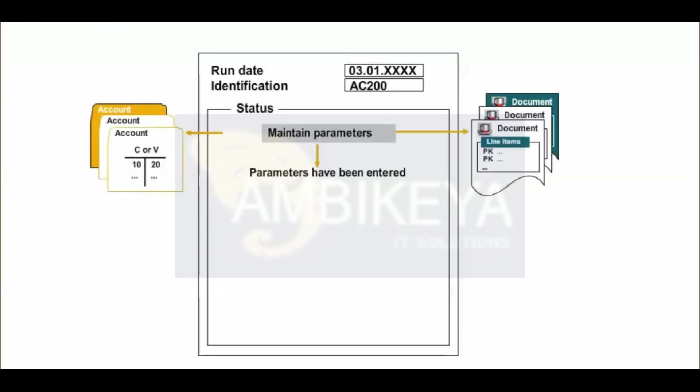Step 1 is maintaining the parameters. You use the parameters to define which accounts and items the payment program is to include in the automatic payment run. The steps are: maintain parameters, run a payment proposal, check the payment proposal, the payment run, and print payment media.